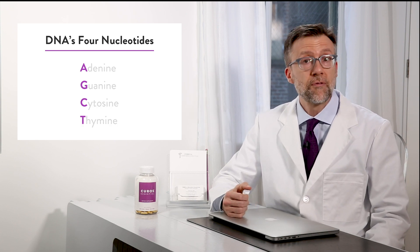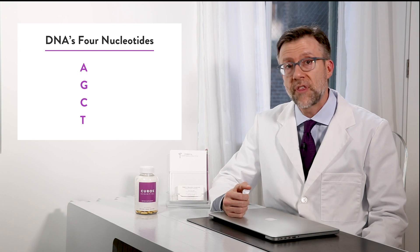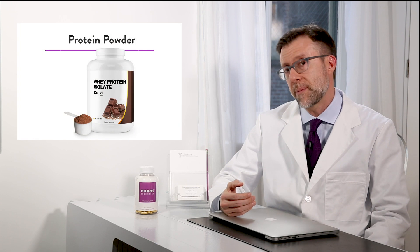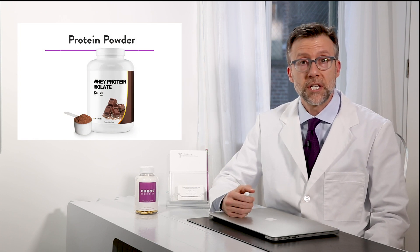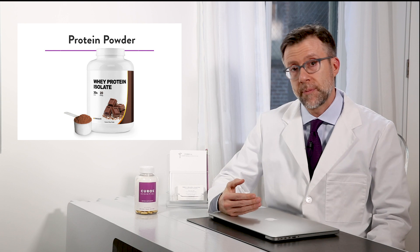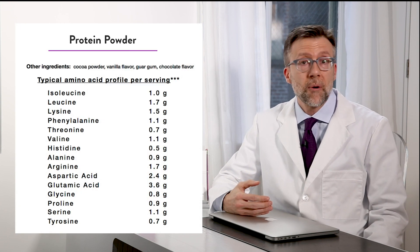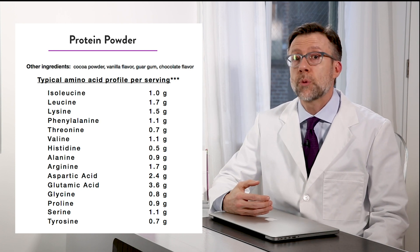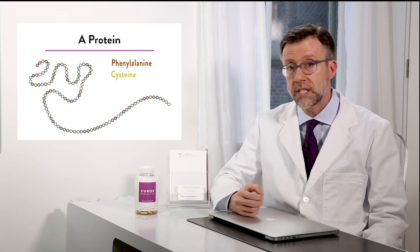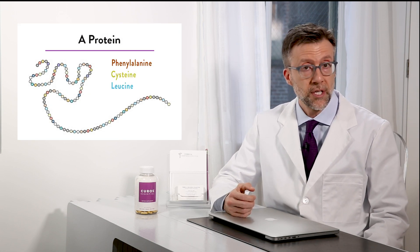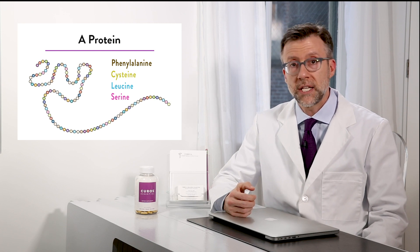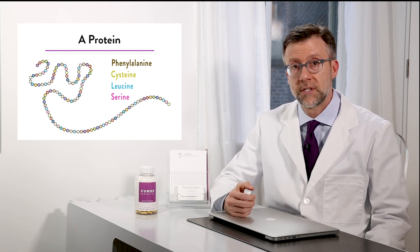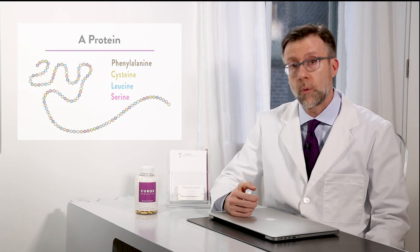How does DNA use just those four nucleotides to code for thousands of different proteins? The answer is in your protein shake. If you look at your protein shake, what do you see on the label? You see a long list of amino acids: leucine, isoleucine, valine, methionine. There are 20 different amino acids. Proteins are just long chains of amino acids strung together in various combinations. So the way your DNA codes for proteins is by telling your cells which amino acids to stick together in what order.